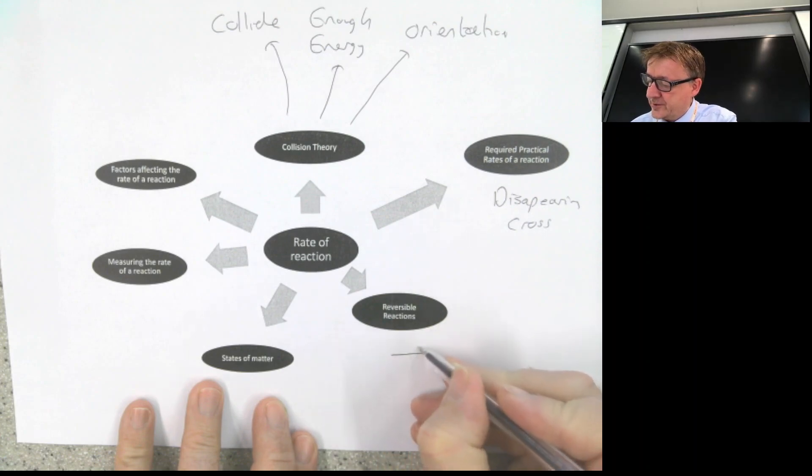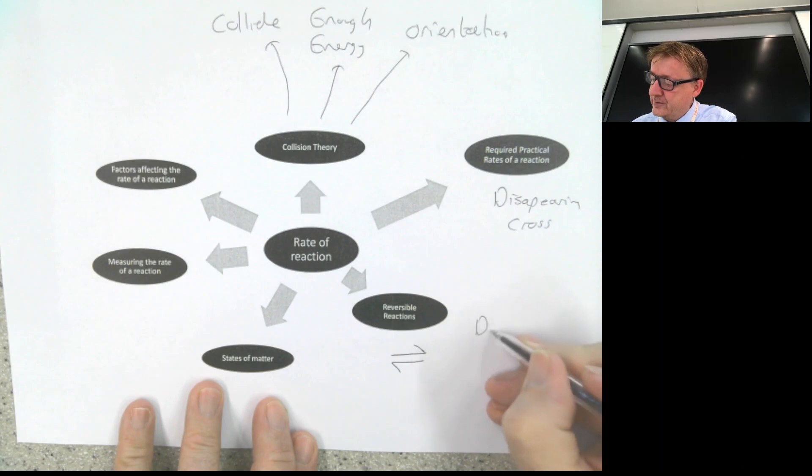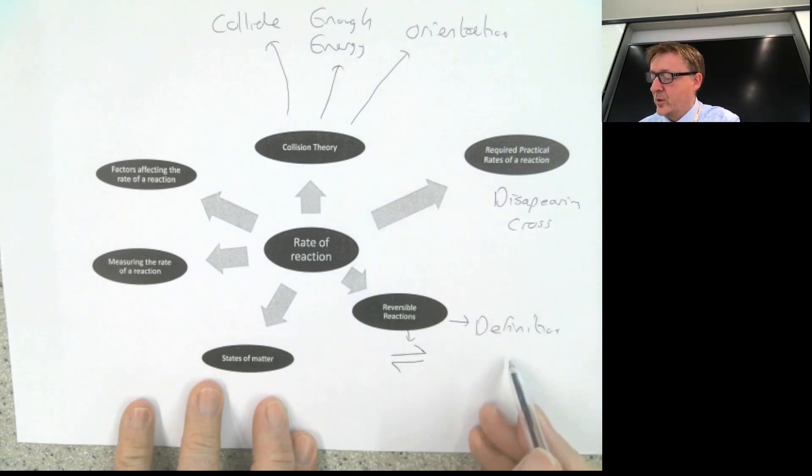A reversible reaction. That is the symbol for a reversible reaction. And you need to know a definition. It basically means reaction can go one direction, it can go another direction. And an example of an irreversible reaction could be burning something, where the reaction only goes in one direction.